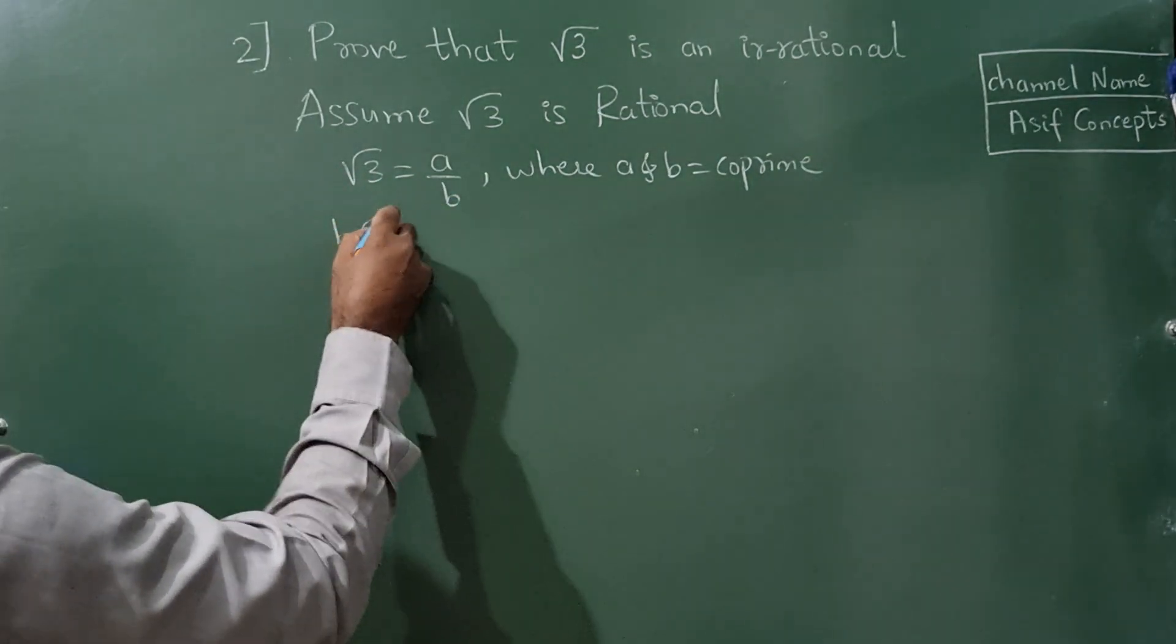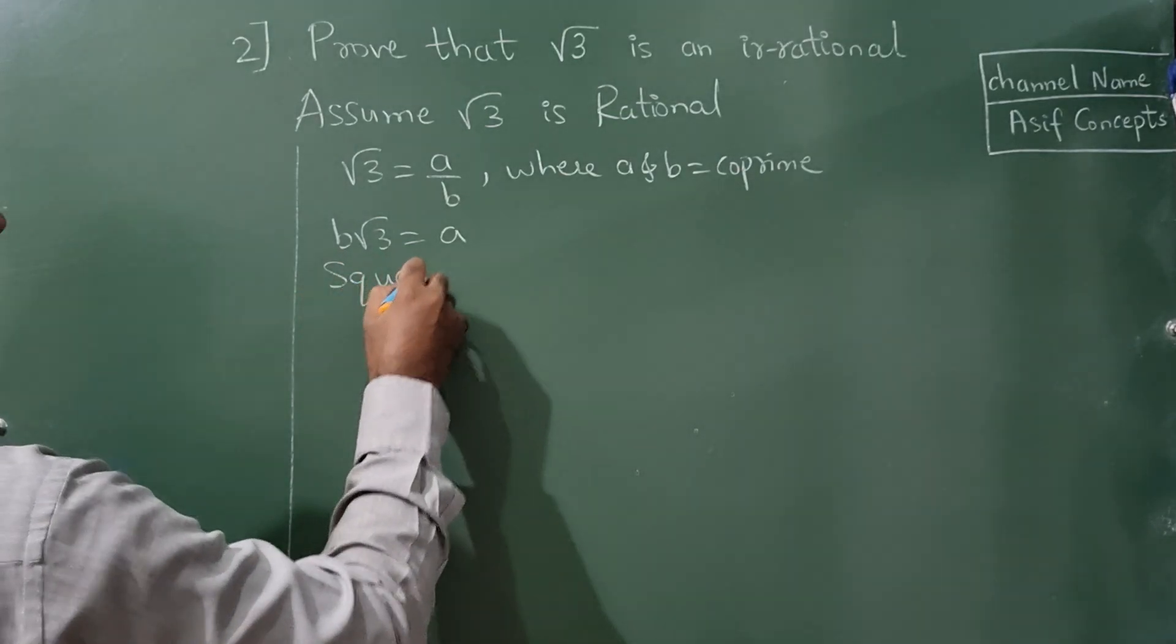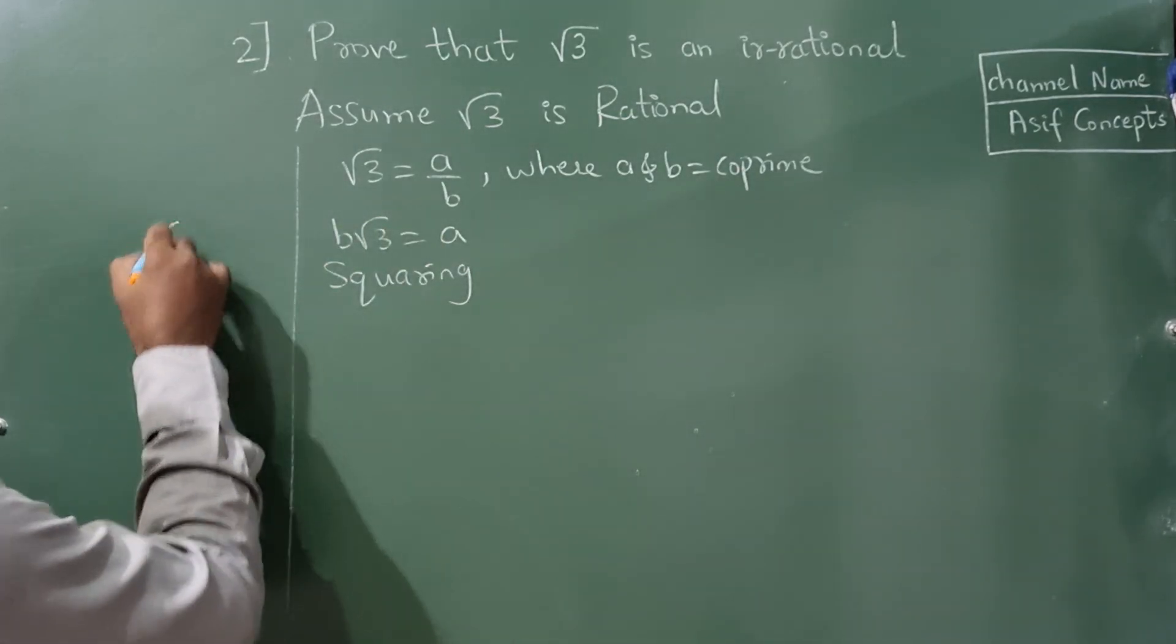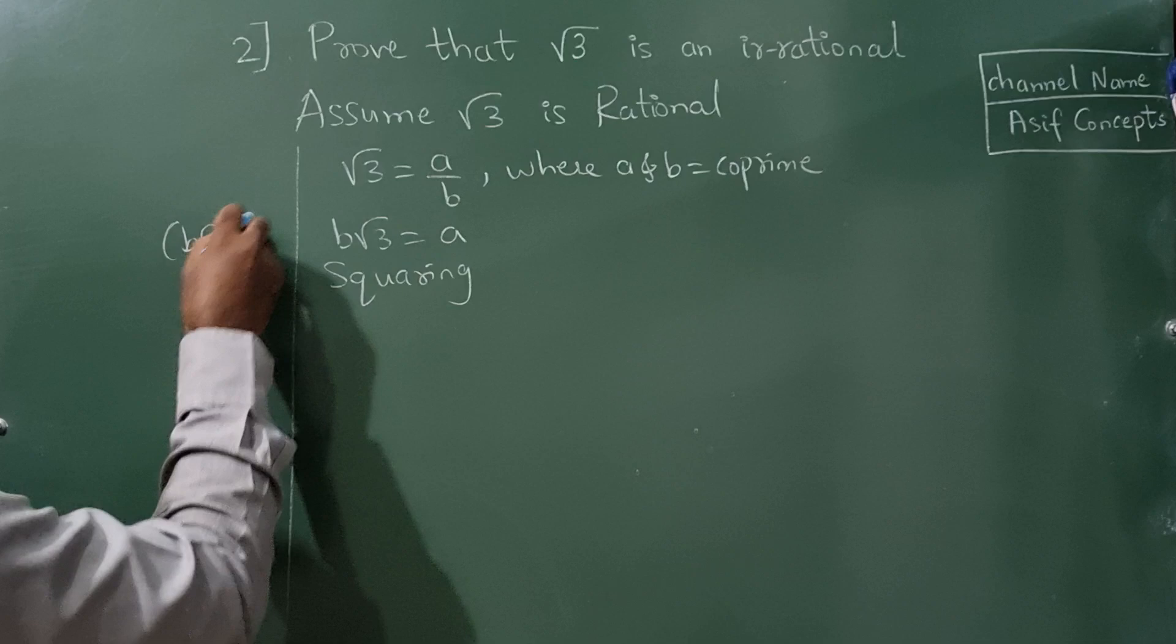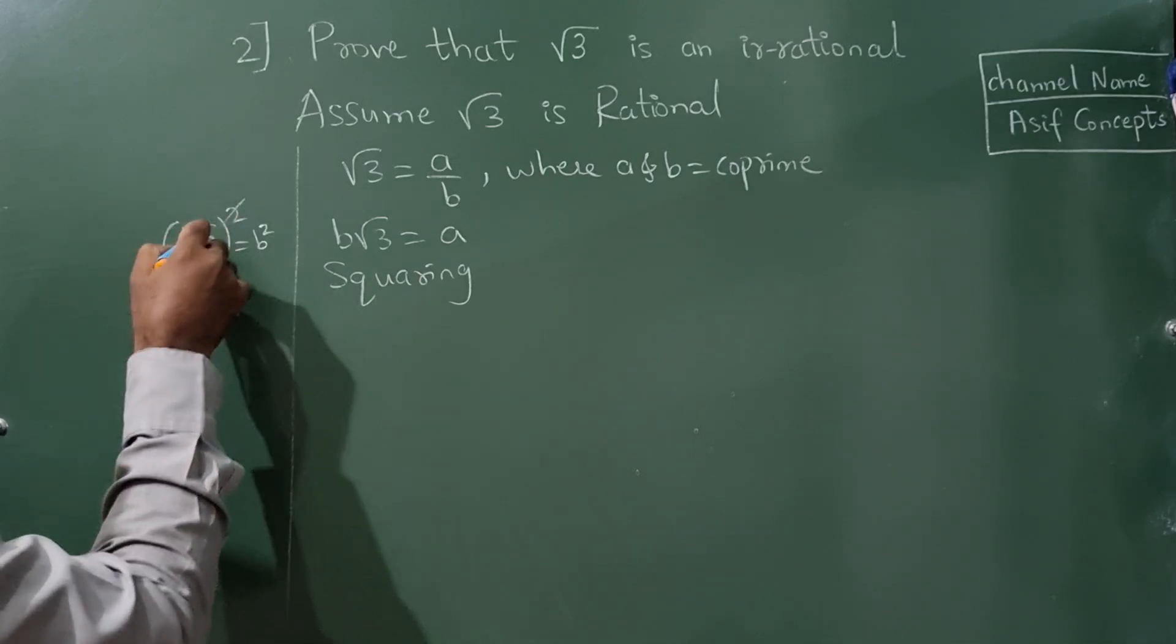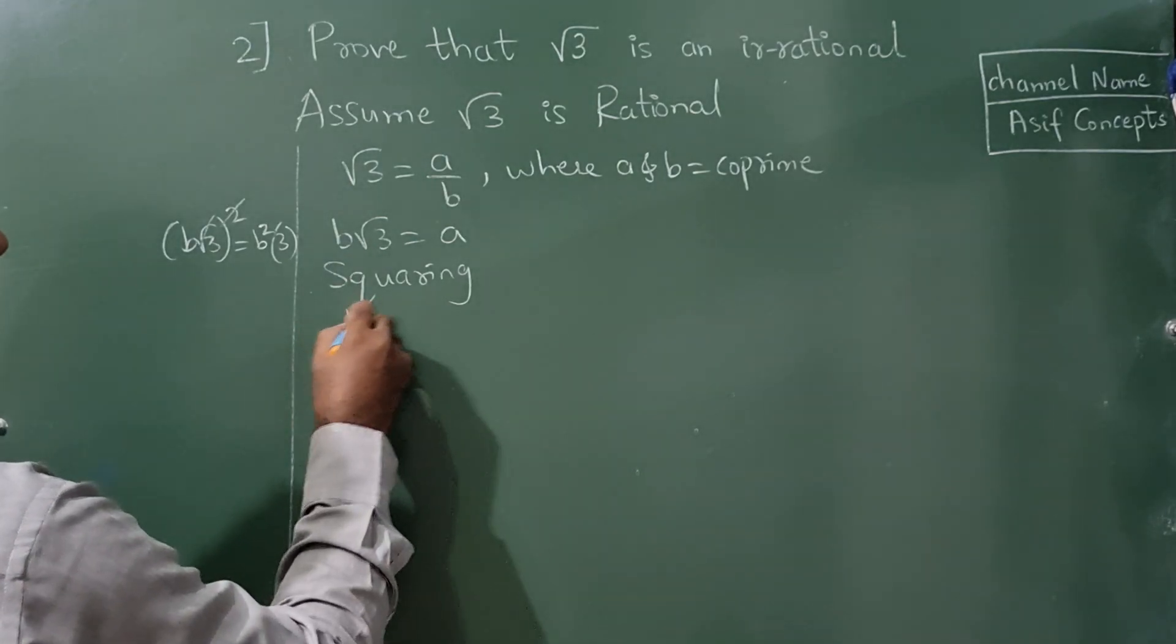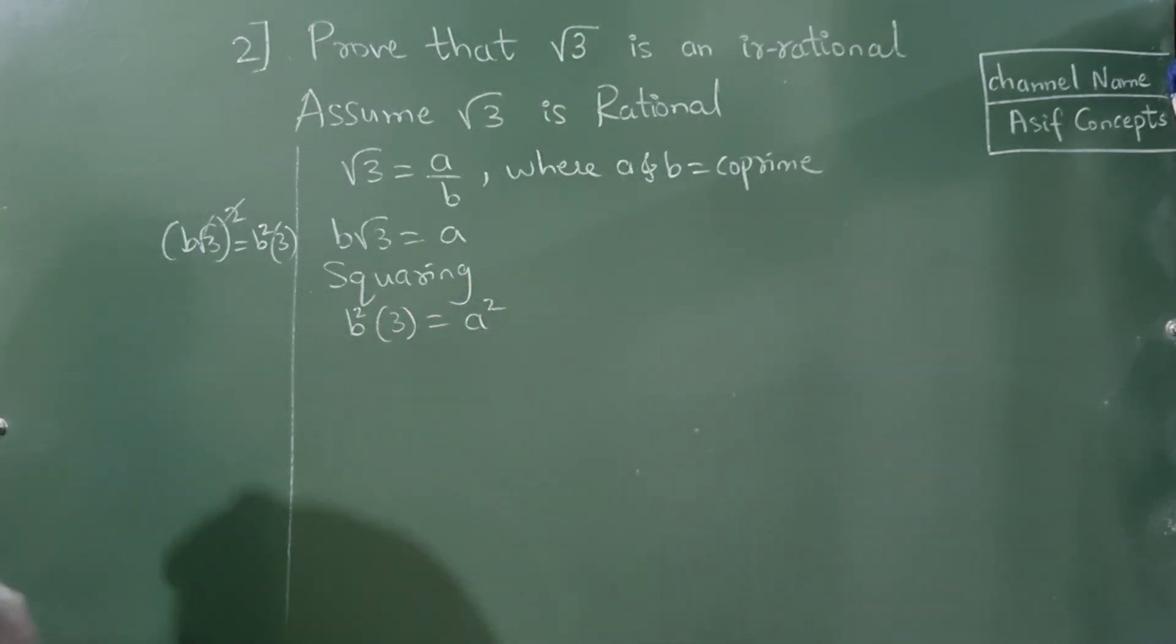Cross multiply this: b root 3 equals a. Now, squaring on both sides. If I square this, this will become b square. Square and root get cancelled, so 3. So I can write this as b square into 3 equals a square.